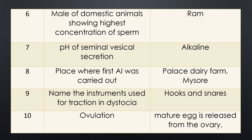Question 8. Place where first artificial insemination was carried out. The names of instruments used are hooks and traction snares.